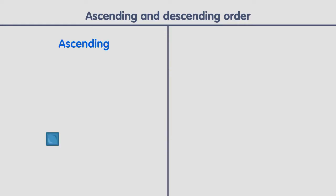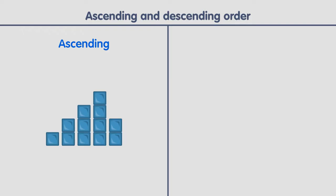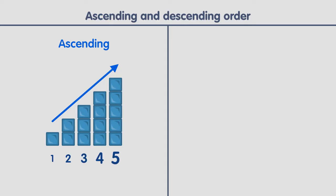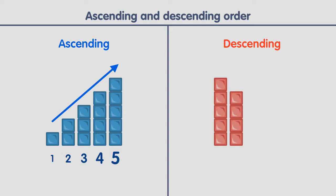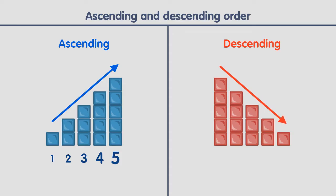We can order numbers in two different ways. The first way is called ascending order, which means the numbers are getting larger. For example, these numbers are in ascending order. The second way is called descending order, which is when the numbers get smaller. For example, these numbers are in descending order.